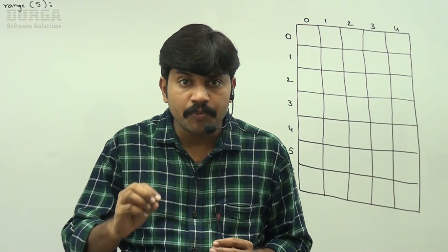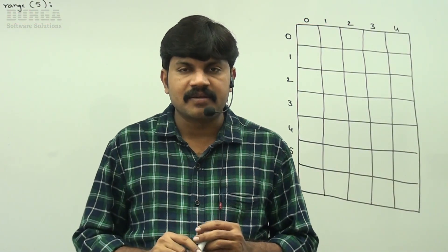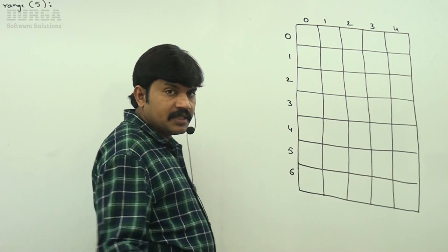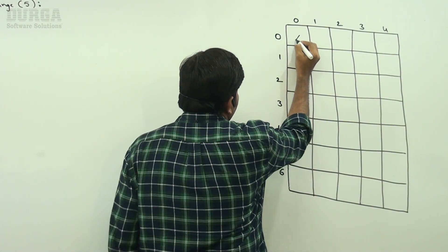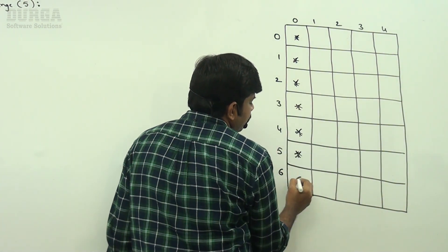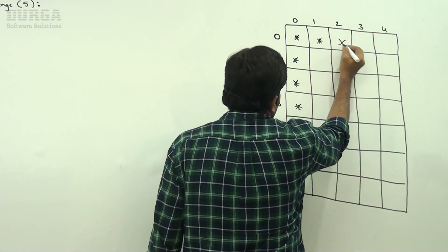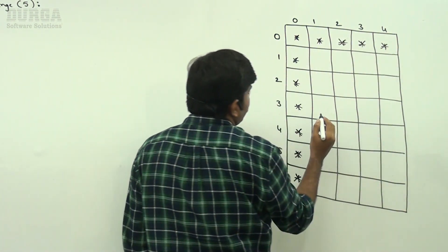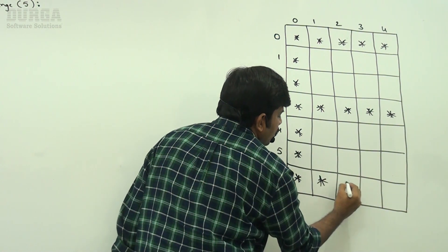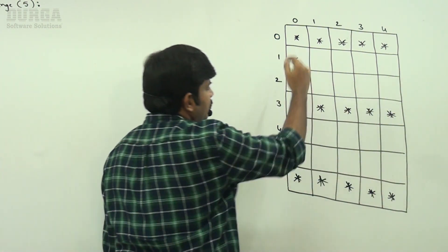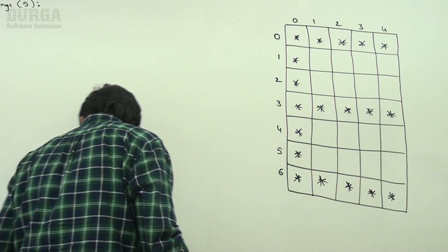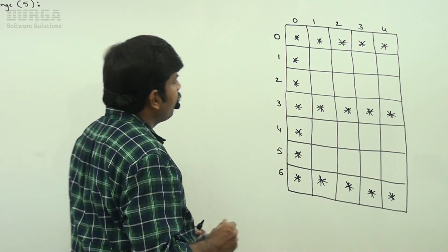In the last video we printed the D pattern. Now I have to go for the E pattern — very easy, just observe how E looks. If you observe E, we have all stars here, and in the third row, and the last row also. This seems to be E perfectly.